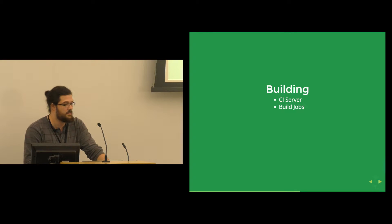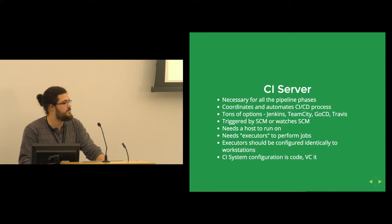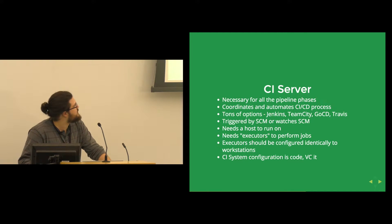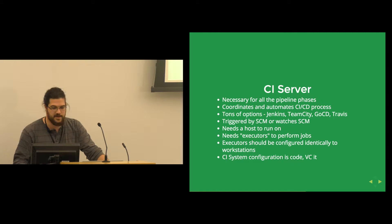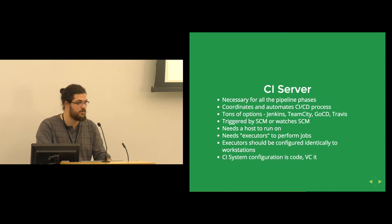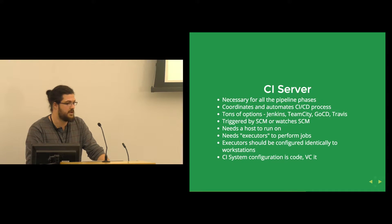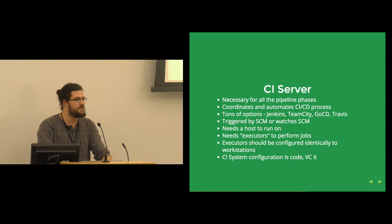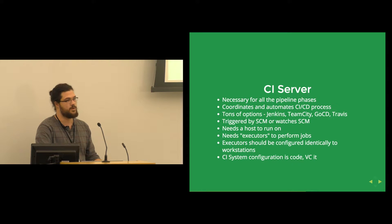Building involves the CI server and build jobs. The CI server is necessary for every phase in this pipeline — it coordinates all the different tasks and functions that have to happen for code to go in one end and apps to come out the other. There are lots of options: Jenkins is probably the most standard and has been around for a long time, though it's starting to show its age. There are also TeamCity, GoCD, Travis, Bamboo, and others with various levels of integration into other services. The particular product you choose doesn't actually matter that much — it's what you do with it. Choosing is really just up to your team, what they need, what's free or not free.